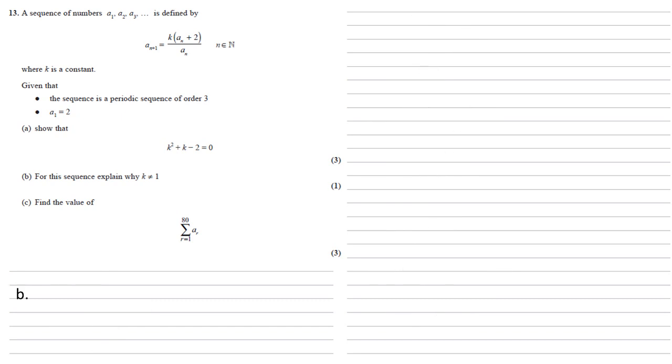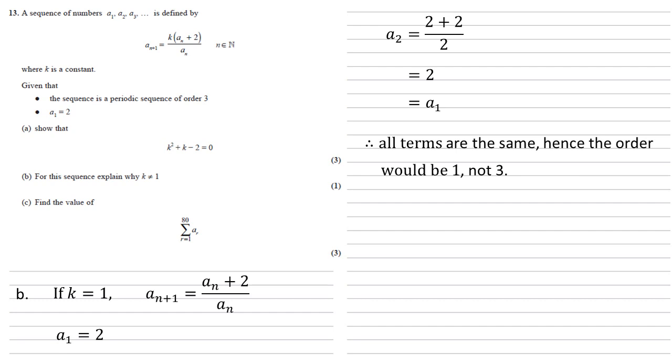For part B we need to explain why for this sequence K cannot equal 1. So if K was equal to 1, using our formula A n plus 1 would equal A n plus 2 all over A n. We know that A1 equals 2. So using these facts would mean that A2 equals 2 plus 2 over 2, which is also equal to 2. Hence A2 would equal A1. So this would mean that all terms would be the same, equal to 2. Hence the order would be 1, not the 3 that we're told about in the question.